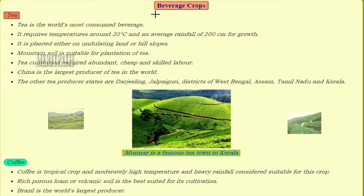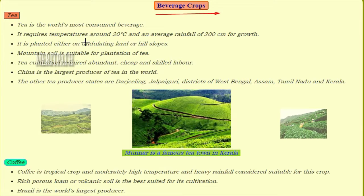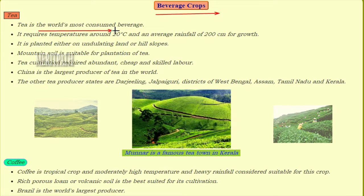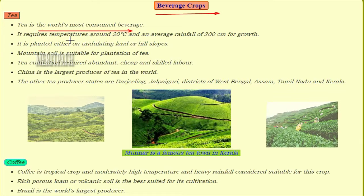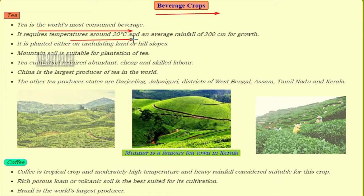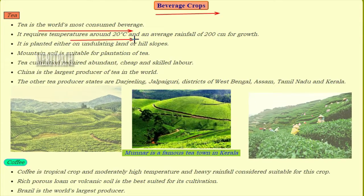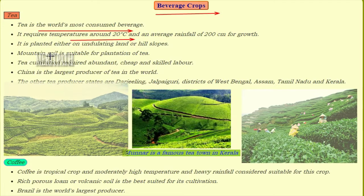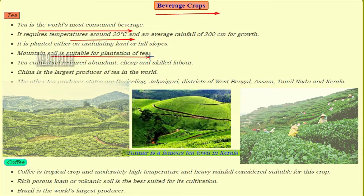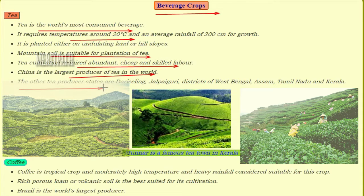Coming to the next type of crop — beverage crops. Tea is the most consumed beverage. It requires a temperature of 20 degrees centigrade and an average rainfall of 200 cm for its growth. Mountain soil is suitable for the plantation of tea. Tea cultivation requires abundant and cheap skilled labor. China is the world's largest producer of tea. The major tea producing states in India are Darjeeling, Jalpaiguri districts of West Bengal, Assam, Tamil Nadu, and Kerala.